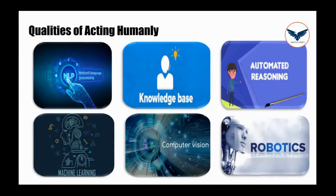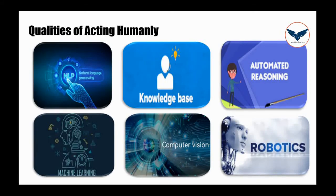Next we will go to machine learning. Machine learning in artificial intelligence is the ability to adapt to new circumstances. For example, if you build a machine to maintain the temperature of a particular industry, it should predict the environment temperature and maintain the temperature of the industry accordingly. This is one of the good qualities of acting humanly.